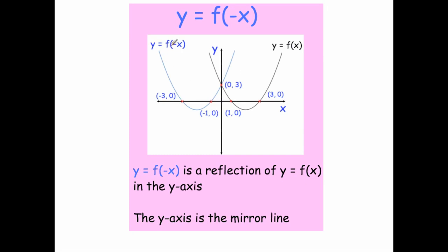Next, y equals f of minus x. It has a minus sign so it's a reflection, but instead of reflecting in the x-axis, it's a reflection in the y-axis — it flips horizontally. So (3, 0) goes to (-3, 0), and (1, 0) goes to (-1, 0). Points on the y-axis stay where they are. The blue curve is y equals f of minus x.